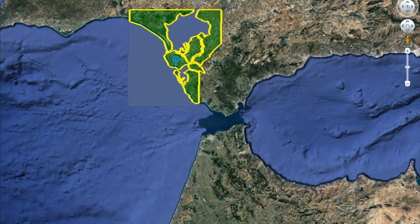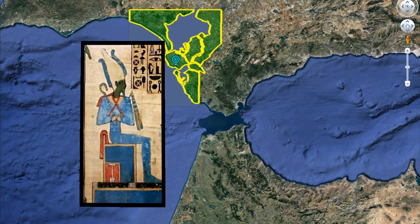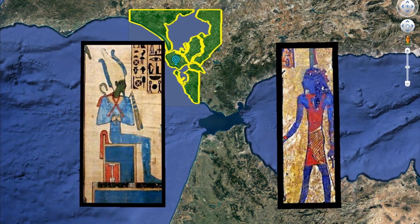According to Diodorus: it is in the Atlanteans, and in the neighboring country of the ocean, that, according to mythology, the gods were born. Later he writes: the Atlanteans live on the coast of the ocean, and a very fertile country. They seem to distinguish themselves from their neighbors by their piety and by their hospitality. They claim that their country is the cradle of the gods.